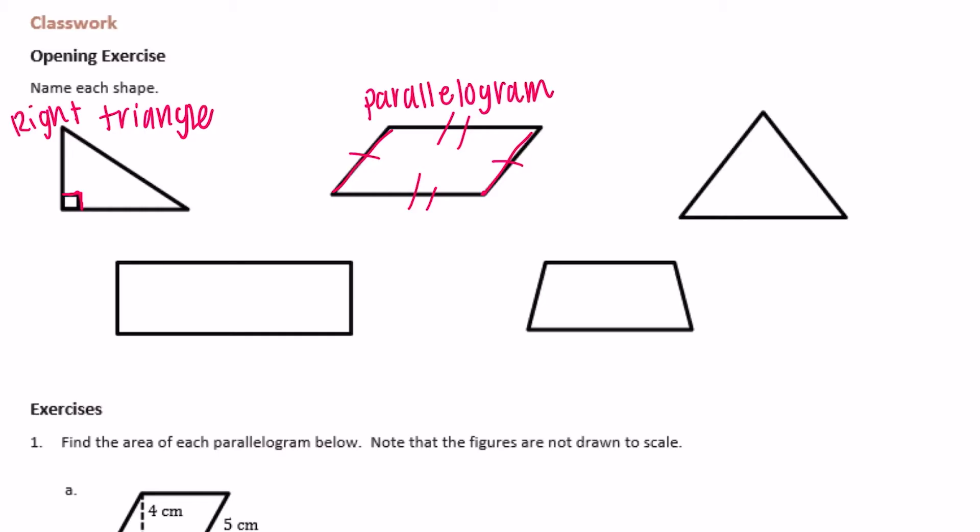Next we have a triangle. It has three sides. It also has three acute angles, so this is an acute triangle. Down here we have something that has two pairs of parallel sides and it has four right angles, which makes it a rectangle. And lastly we have something that has at least one pair of parallel sides, so this is a trapezoid.